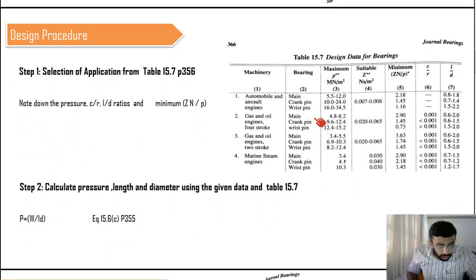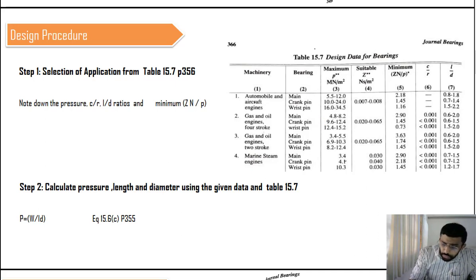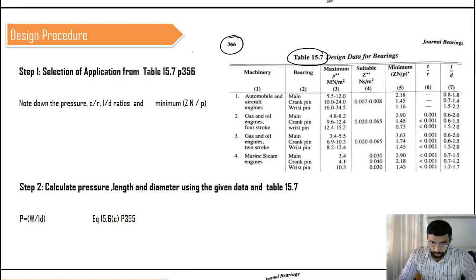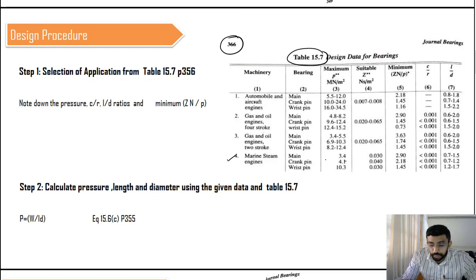In Step 1, we select the application. Sometimes the question specifies the application; sometimes it does not. If specified, we go to Table 15.7 on page 366, which lists many applications. For example, for a marine steam engine, the usual maximum pressure is in the range of 3.4 to 4.1 or up to 10.3 MPa. The main shaft, crank pin, and bridge pin all work at different pressures, and the units are provided in the table.